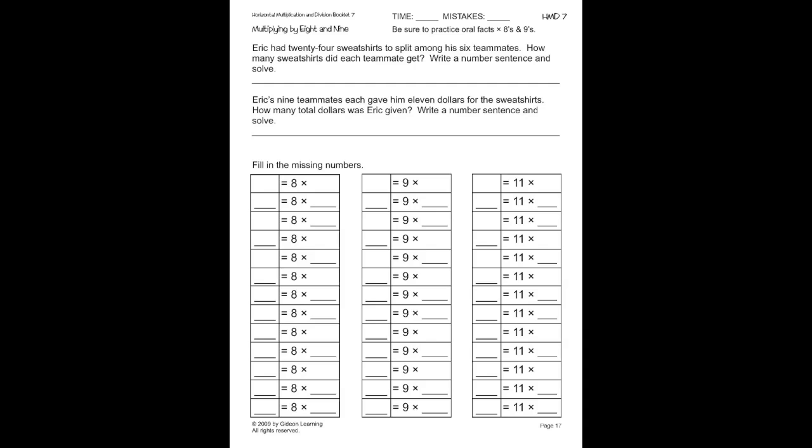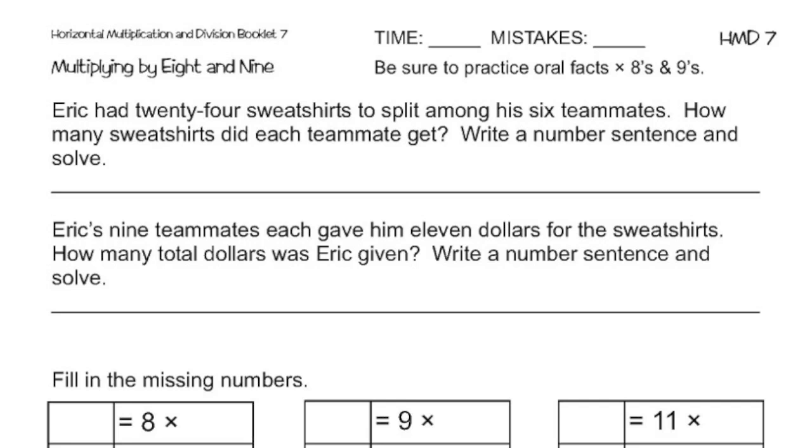Let's skip up to page 17 and work on that word problem. Eric had 24 sweatshirts to split among his 6 teammates. How many sweatshirts did each teammate get? Write a number sentence and solve. He had a total of 24 and 6 people. He's going to split up between 6 people. Well, to me, that means division.